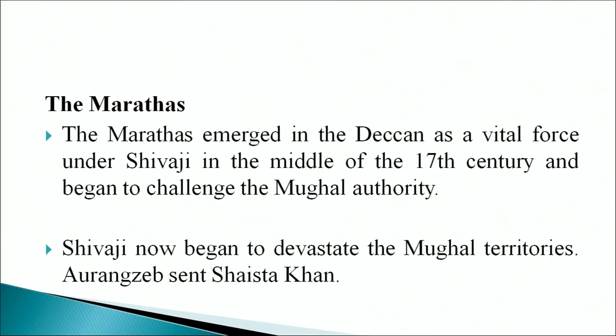During Aurangzeb's reign, Mughal relations with the Rajputs deteriorated particularly over the issue of succession to the throne of Marwar. Ahmadnagar was first to be defeated by the Mughal Empire during Aurangzeb's reign. The struggle with Deccan states and Marathas became more intensive. In fact Aurangzeb spent the last 20 years of his reign in the Deccan fighting against them. By 1687 the Deccani kingdoms of Bijapur and Golconda were annexed to the Mughal Empire. However, the time and money spent in the Deccan by Aurangzeb proved a great drain on the Mughal Empire.